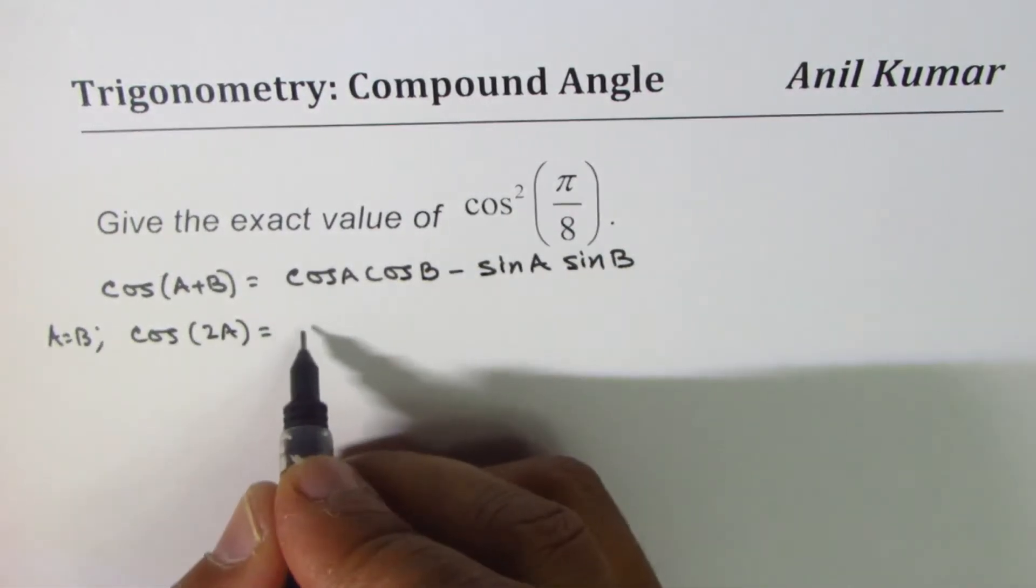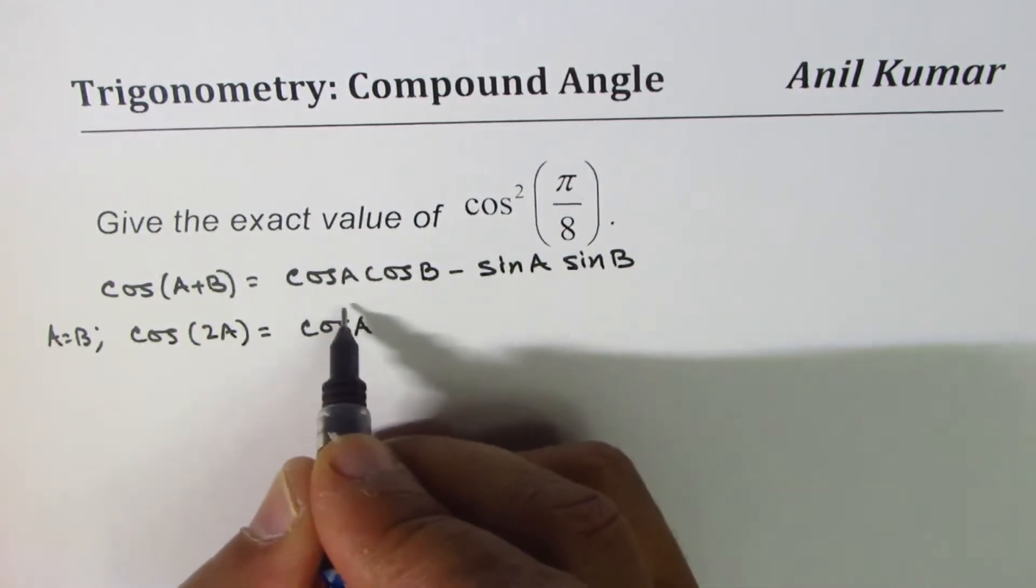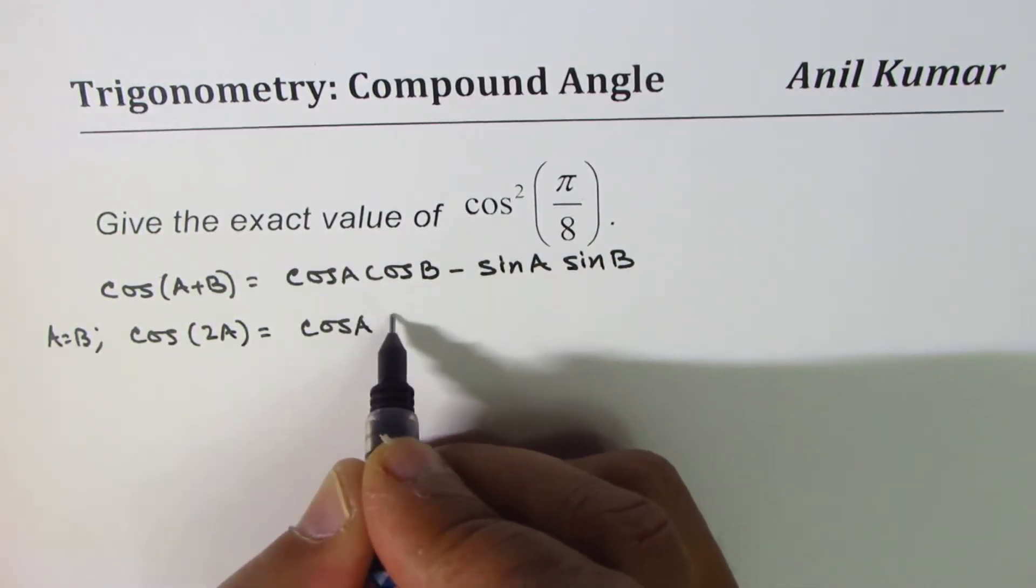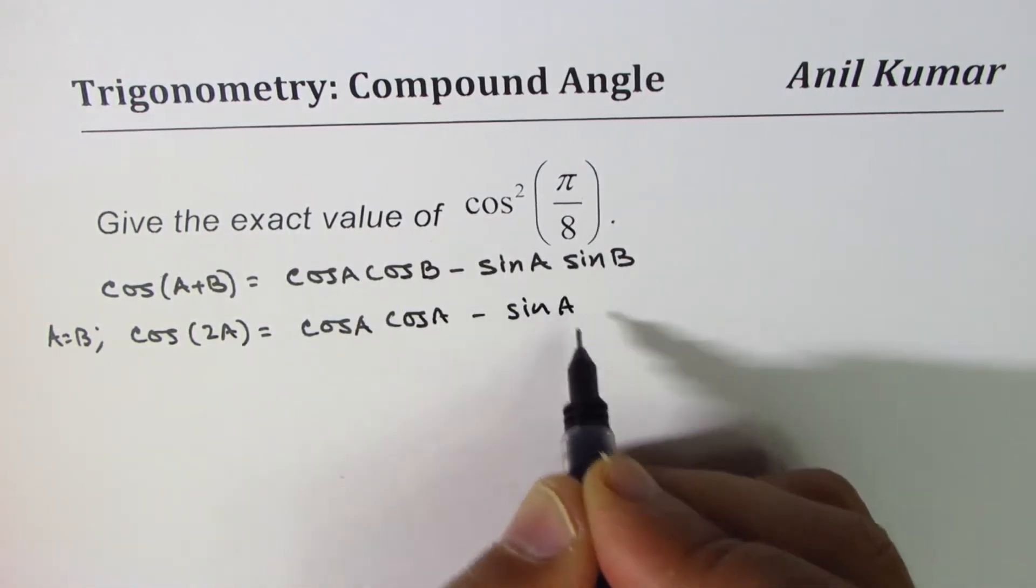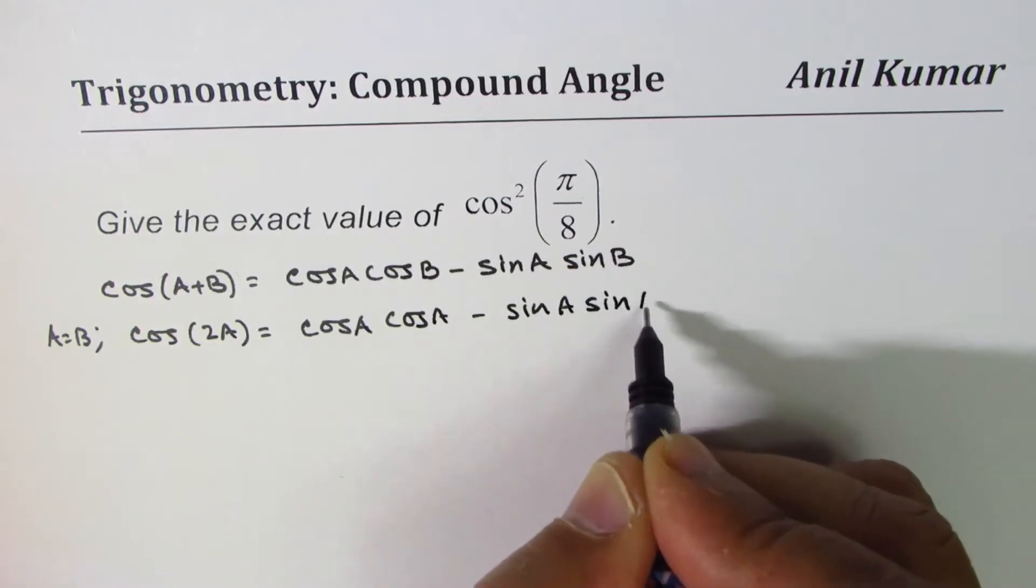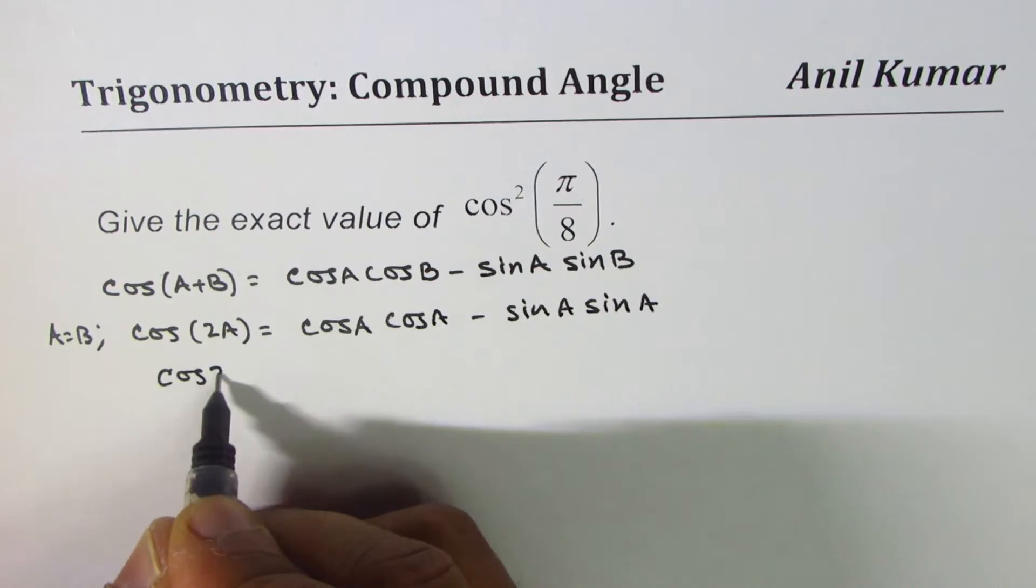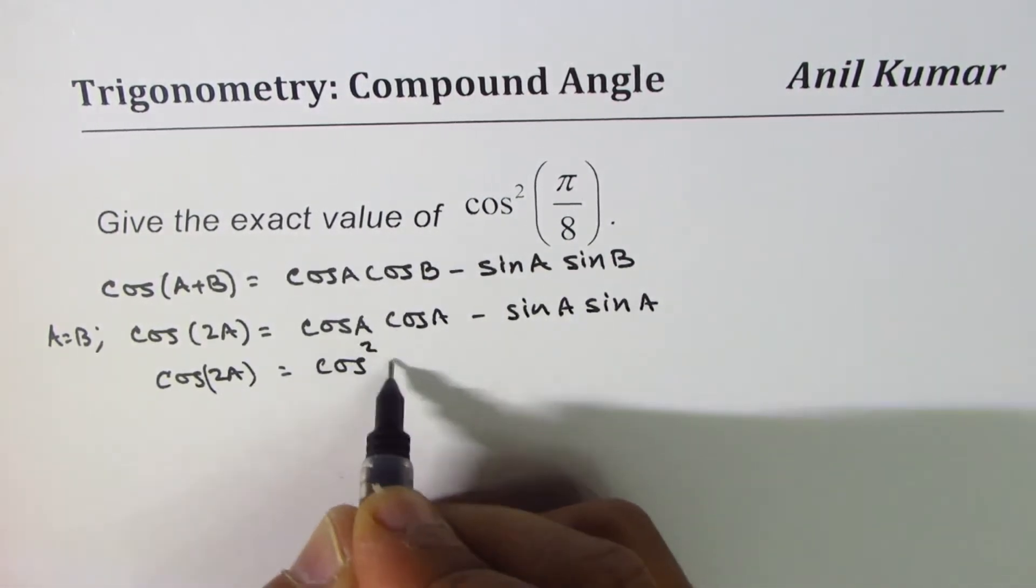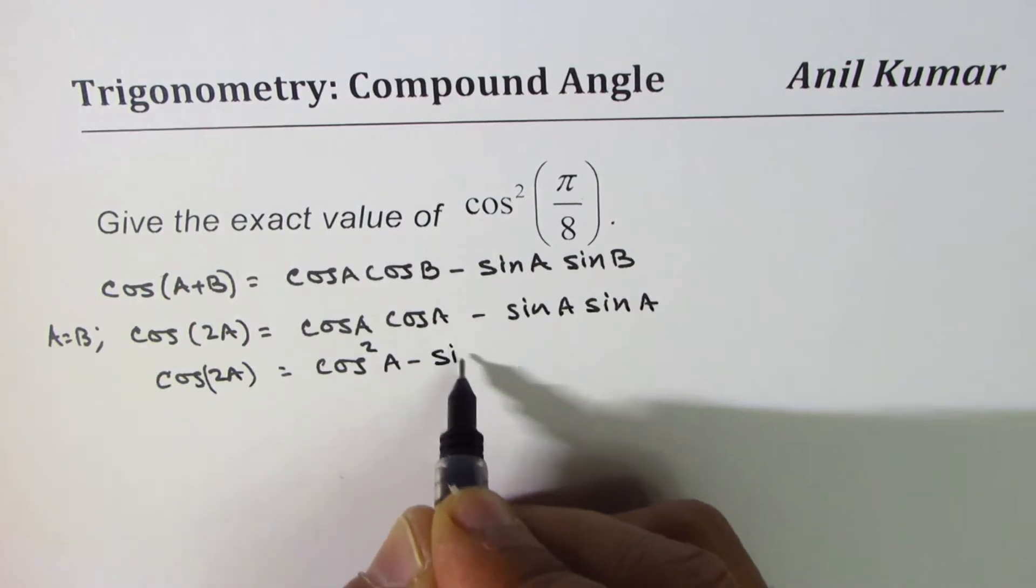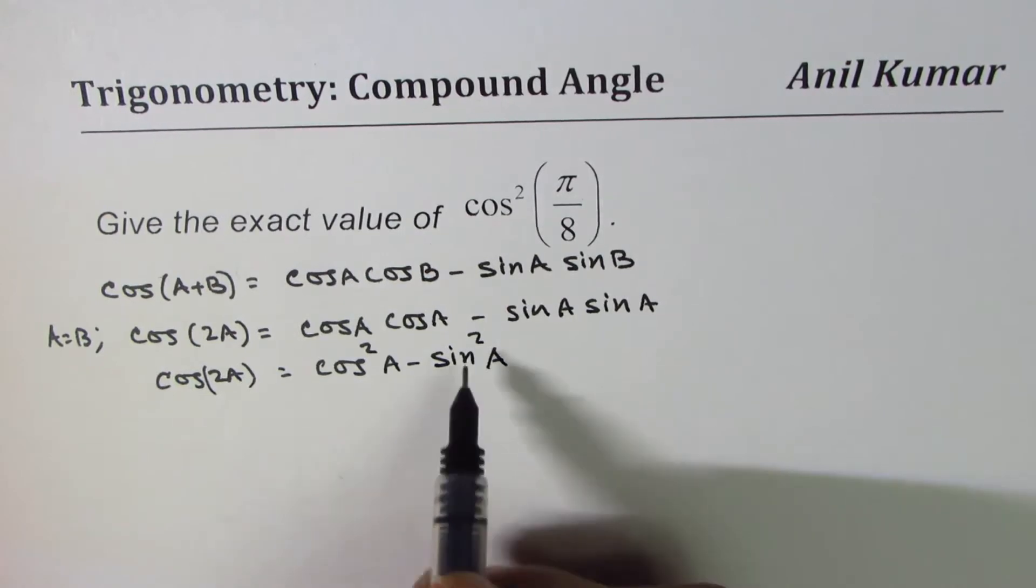If A equals B, in that case we could write this as cos(2A). Replacing B with A equals cos A times cos A minus sin A sin A, right? So if I make A equal to B, then we get cos(2A) equal to cos²A minus sin²A.